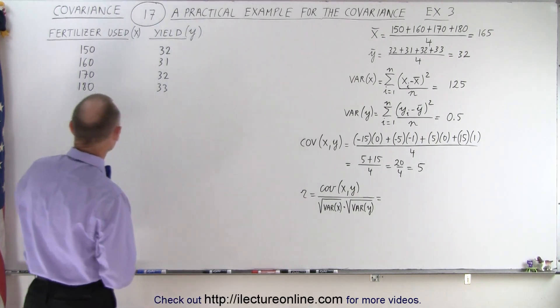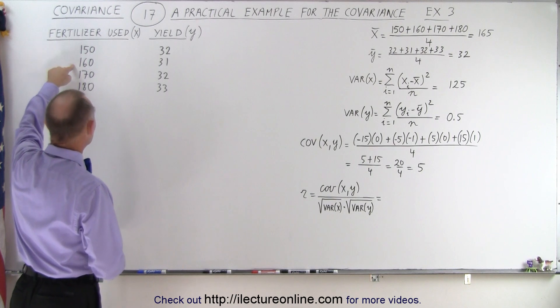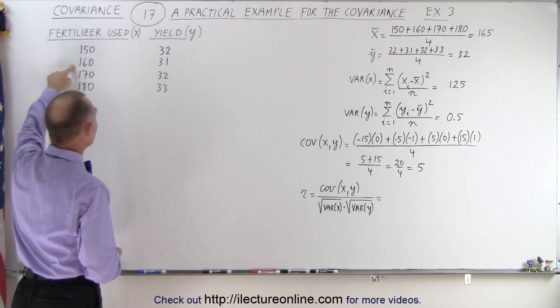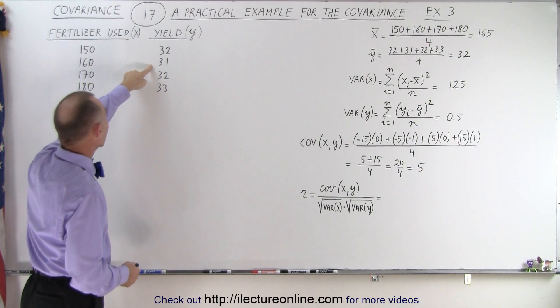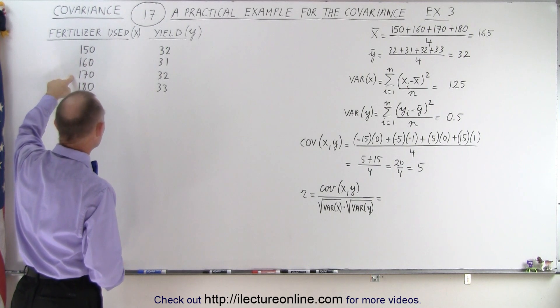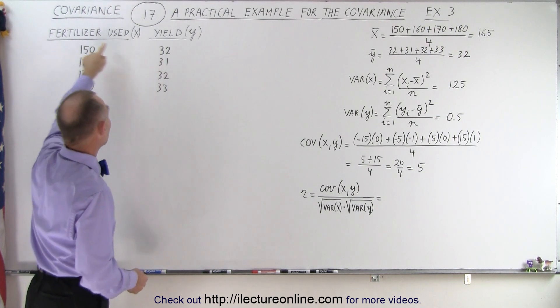Matter of fact, when the farmer increased from 150 to 160 pounds per acre, notice that the yield actually went down. And after we went back up to 170, it went back to the yield that we had at 150.